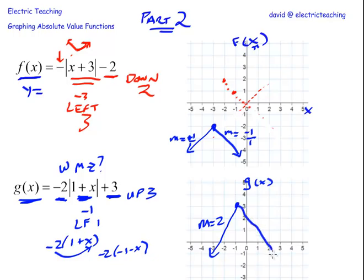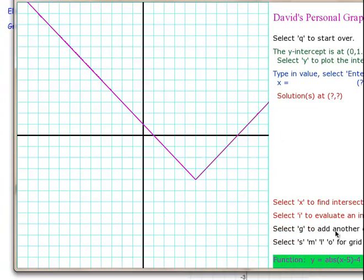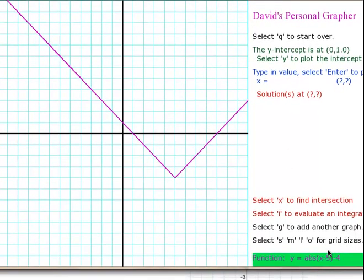Let me show you a couple quick graphs on my personal graphing calculator here. This is the graph of the absolute value of x minus one. You can see it down here. X minus five, excuse me, and then minus four. Let's do a quick new graph here.